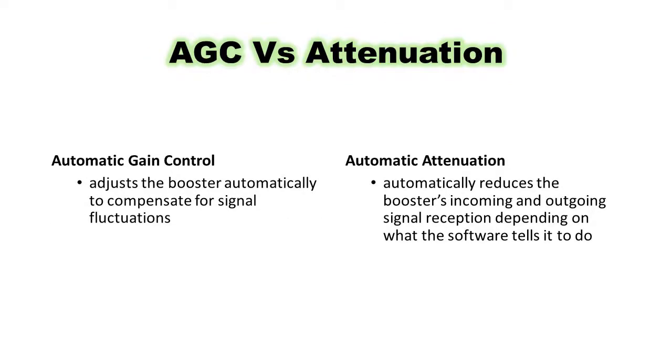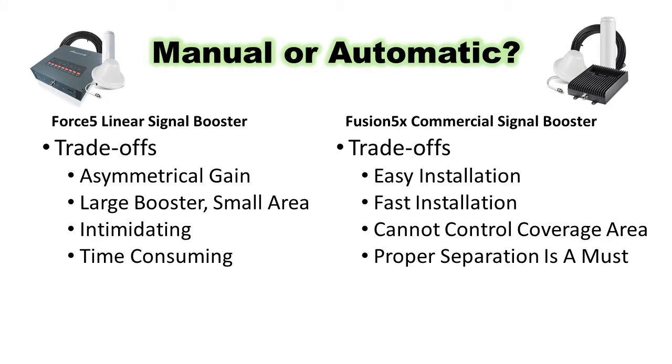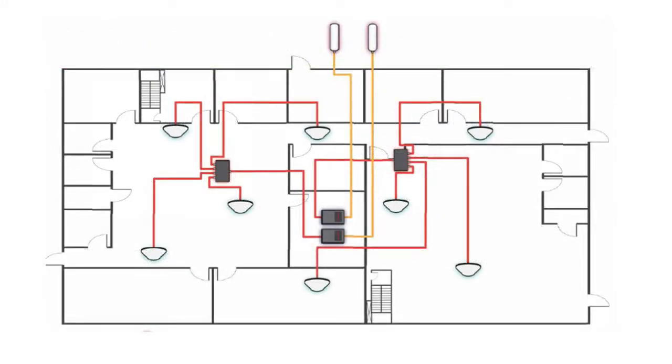In SureCall systems, there's a difference between automatic attenuation and automatic gain control or AGC. AGC adjusts the booster automatically to compensate for signal fluctuations. Automatic attenuation automatically reduces the booster's incoming and outgoing signal reception depending on what the software tells it to do. Manual and automatic attenuation have different advantages and disadvantages.